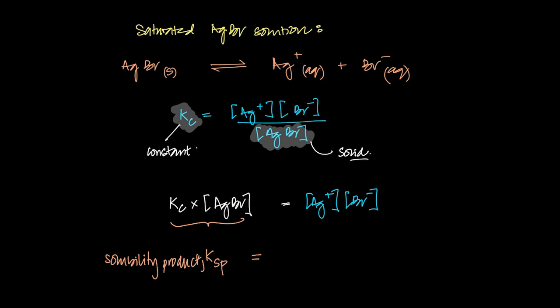So the Ksp for this relationship or this expression of the equilibrium between the aqueous ions and the solid is simply the right hand side of the equation, which is the aqueous ions. That's the first part of this chapter - to be able to write the Ksp expression for any saturated solution.